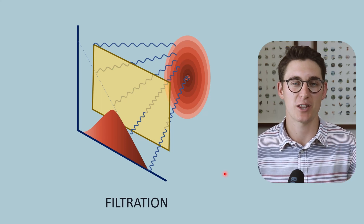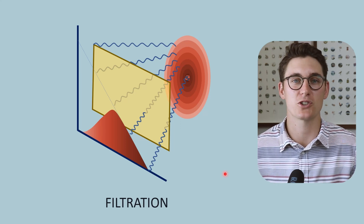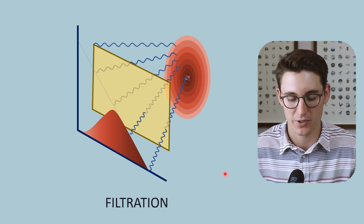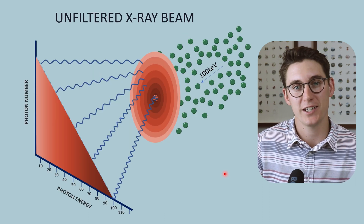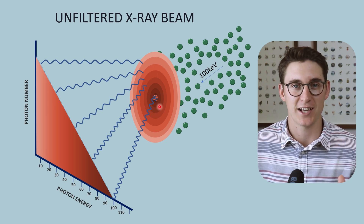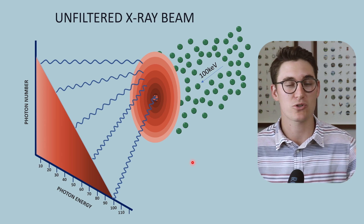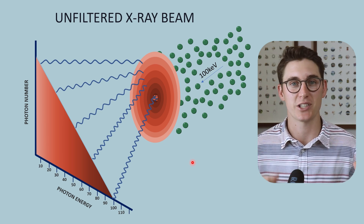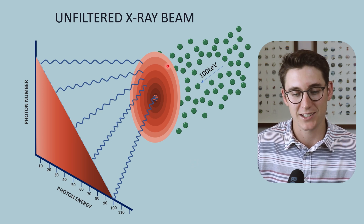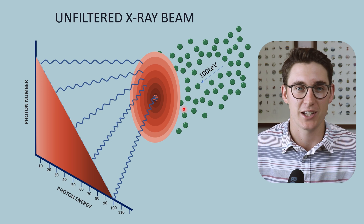Let's spend some time having a look at the process of filtration, which is an incredibly important topic when it comes to our x-ray physics module. Later on in this module we're going to examine the process of x-ray production at the anode, including Bremsstrahlung radiation and characteristic radiation.